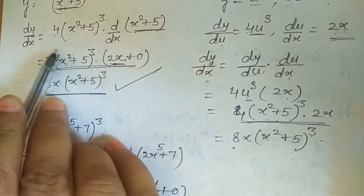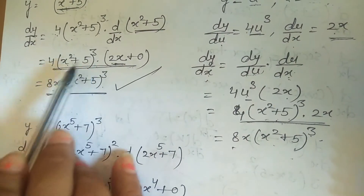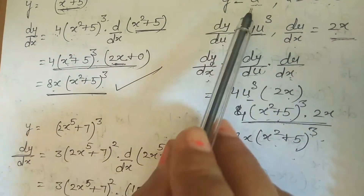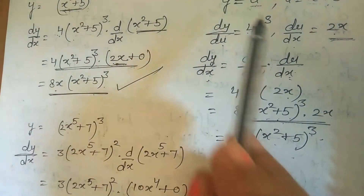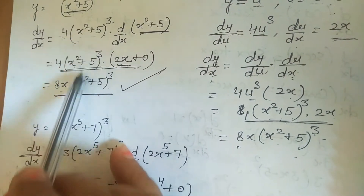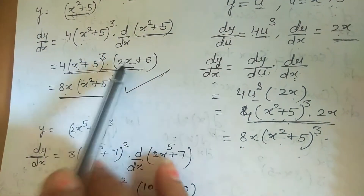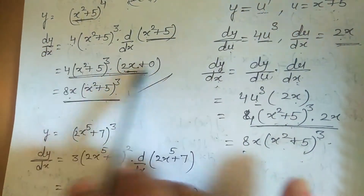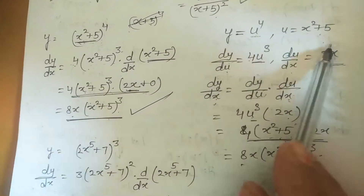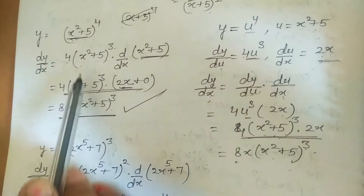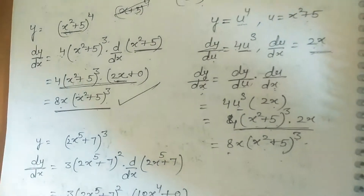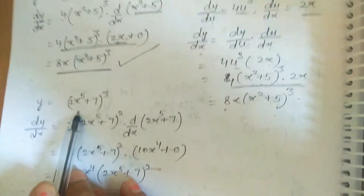You can use the direct chain rule or the substitution method — both are equivalent. The substitution method explains why the chain rule works.